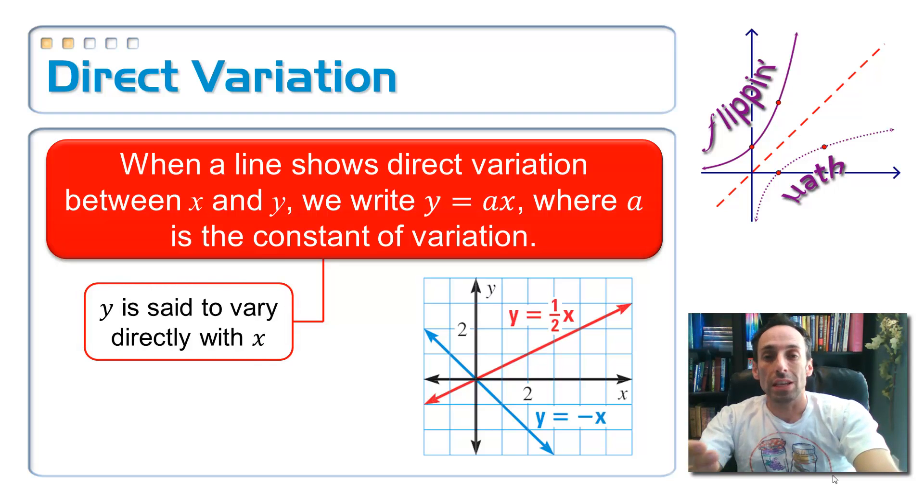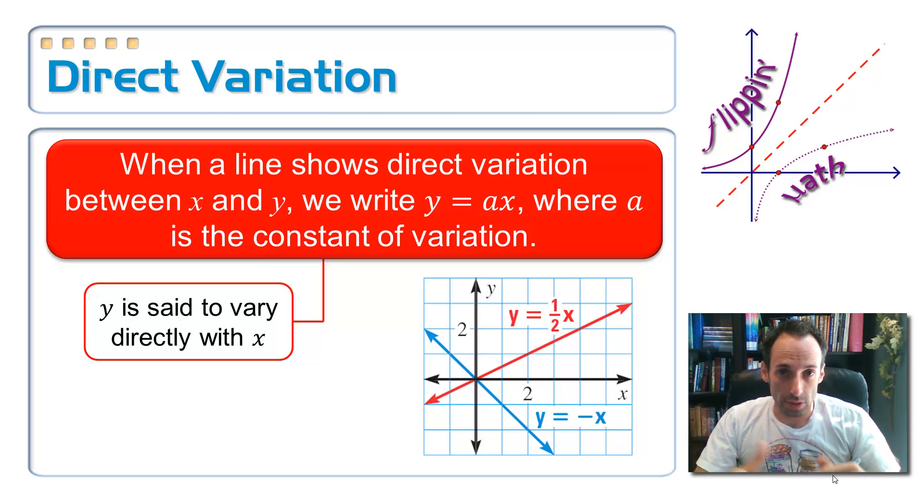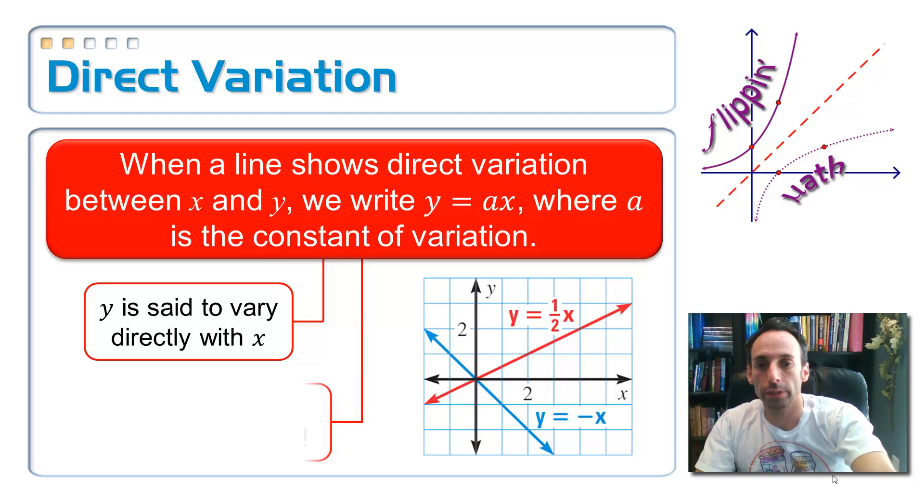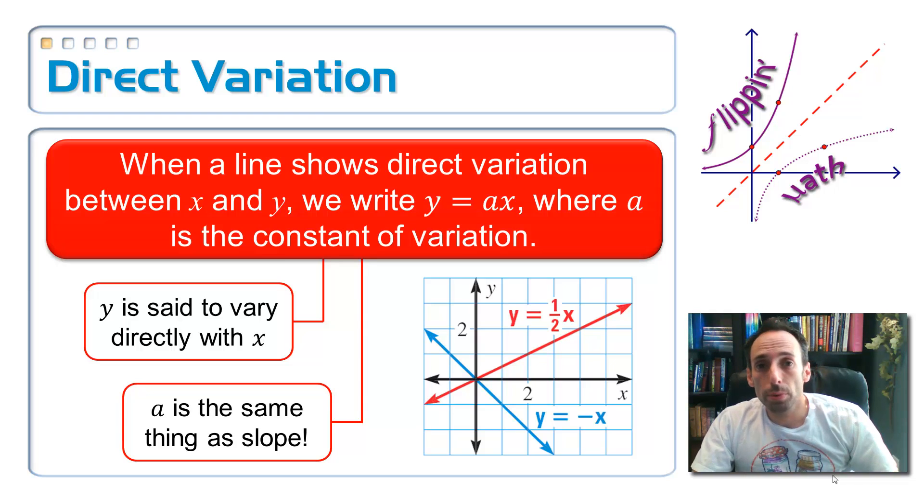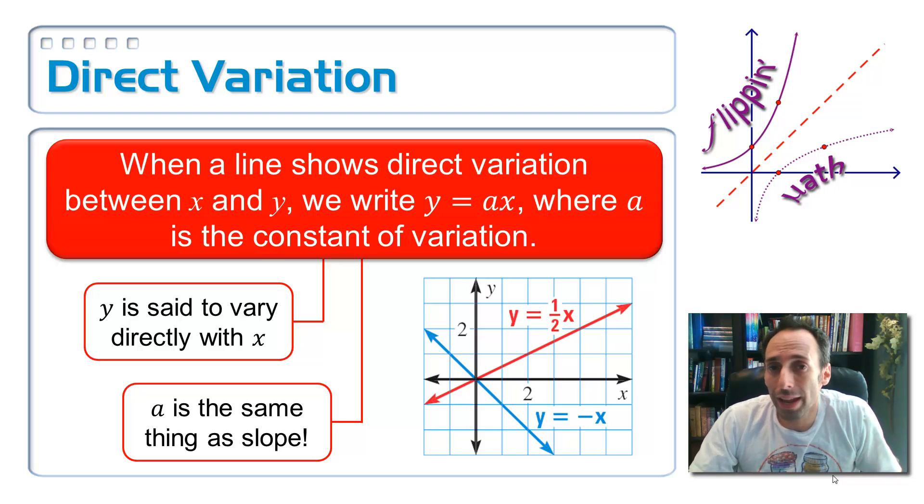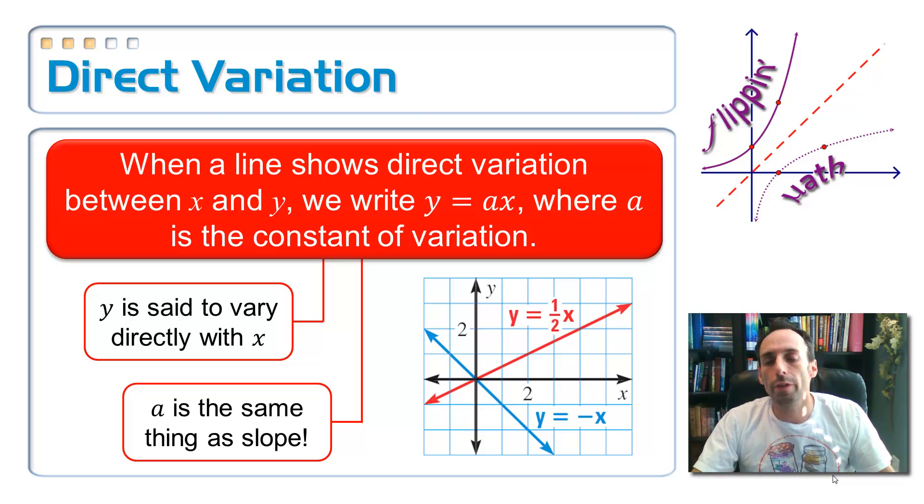If you see this in words, if you see this in a paragraph, especially in a science class, in a science book, it might say y is said to vary directly with x. Y varies directly with x, or y is directly proportional to x. So that's the wording that you will sometimes see. And of course, a is the same thing as slope. When you get into pre-cal and you talk about direct variation again, you'll change the letter to a k. And as a matter of fact, if you were to look up stuff on the internet, I'm pretty sure that they use k as the constant of variation too.